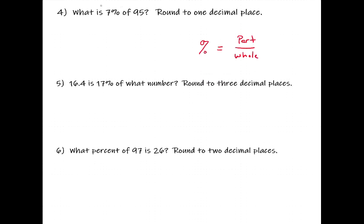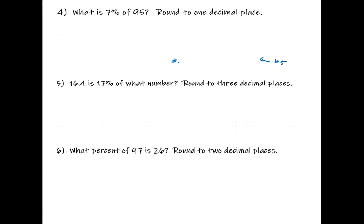In problem four, what are we looking for — the percentage, the part, or the whole? We're given the percentage: 'What is seven percent of 95?' So in number four we're looking for the part. In number five, '16.4 is 17 percent of what number?' — that's the whole. In number six, 'What percent of 97 is 26?' — we're looking for the percent. These are the only three possible scenarios because there are only three components to percent being part of a whole.